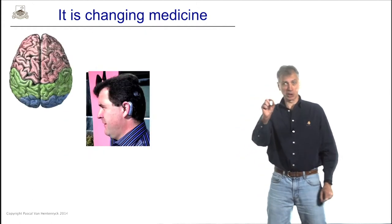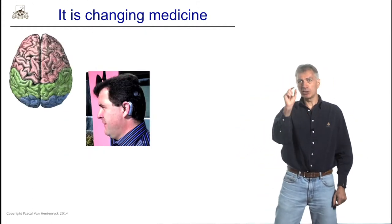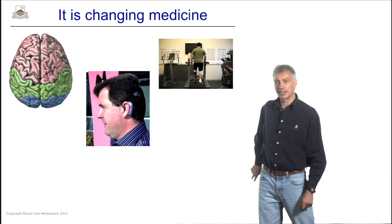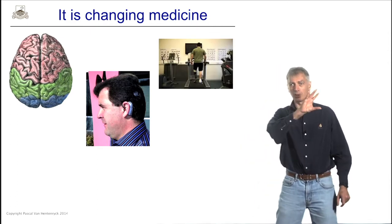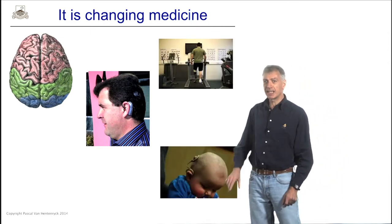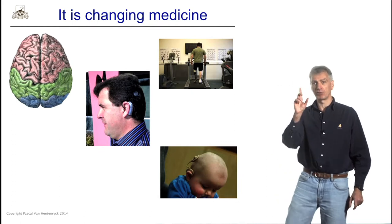This revolution is already putting implants in the brain of people such that they can control artificial limbs automatically or such that they can make deaf children hear for the first time.